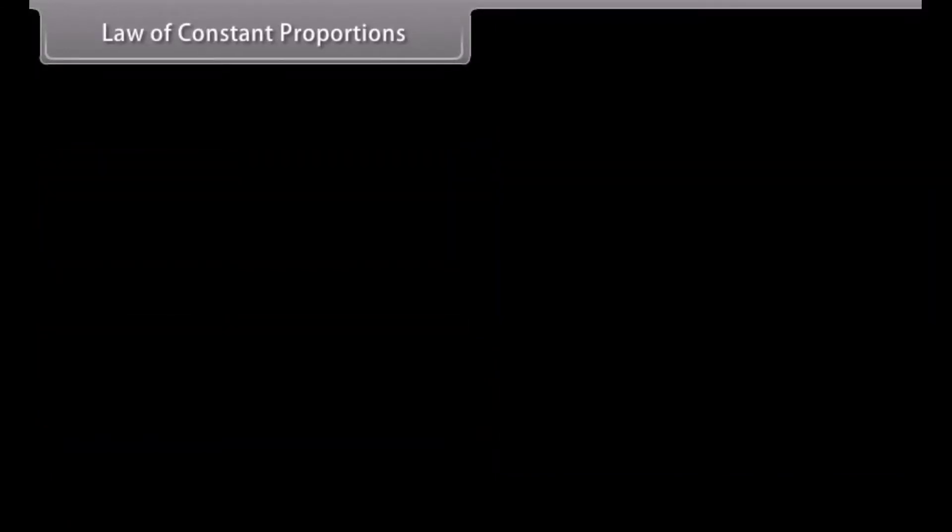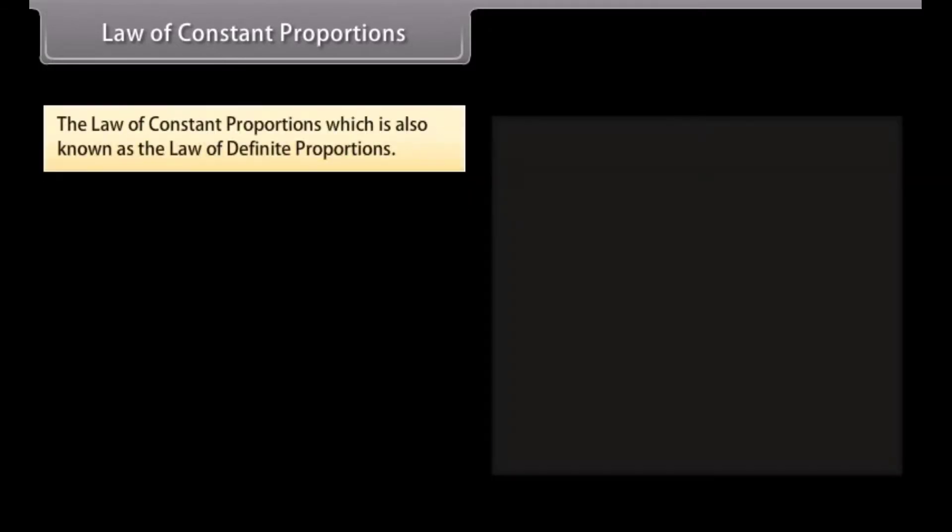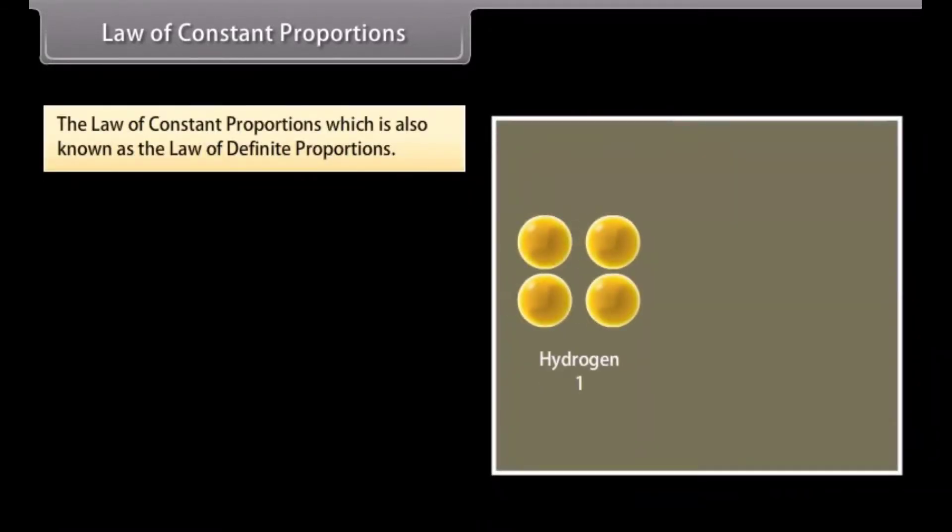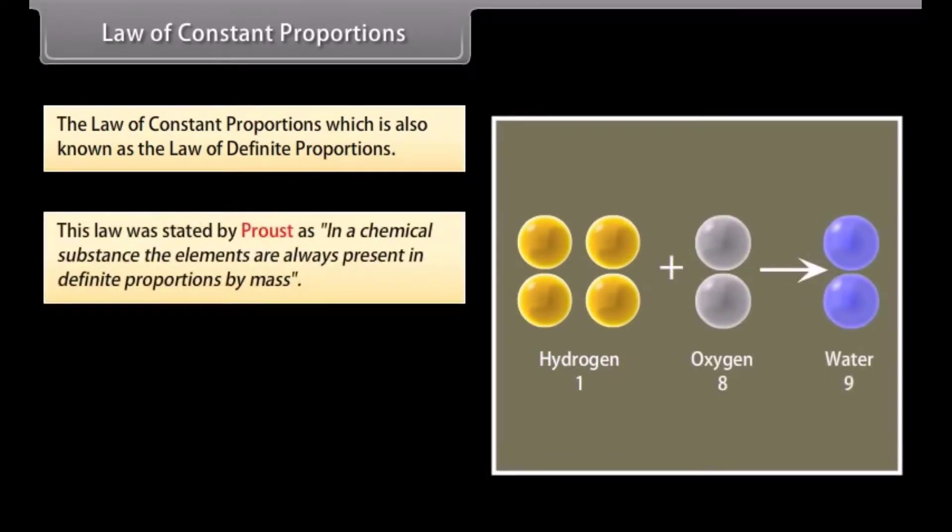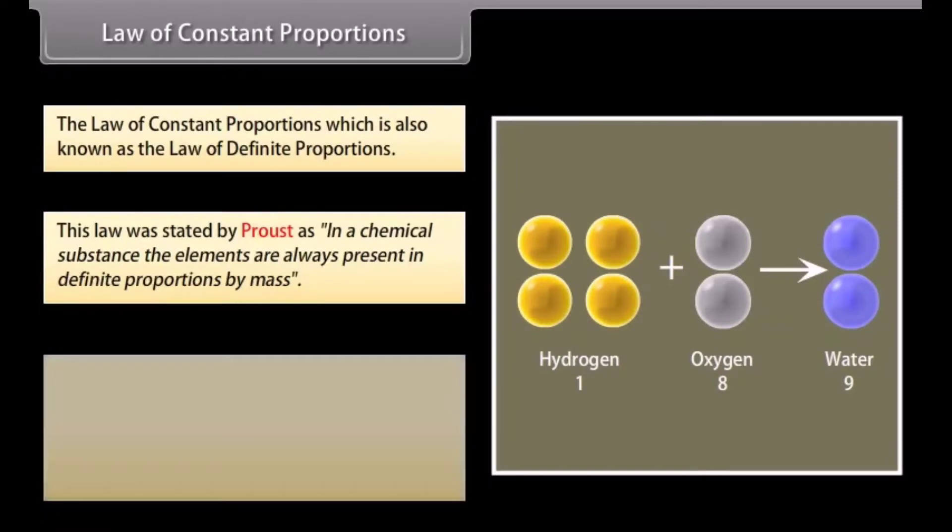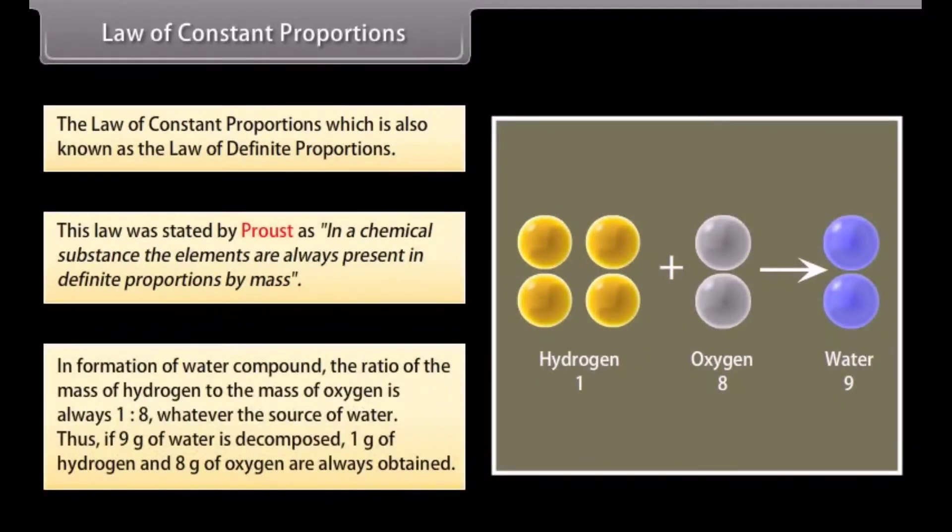Law of Constant Proportions. The Law of Constant Proportions, which is also known as the Law of Definite Proportions, was stated by Proust. In a chemical substance, the elements are always present in definite proportions by mass. In formation of water compound, the ratio of the mass of hydrogen to the mass of oxygen is always 1 is to 8, whatever the source of water. Thus, if 9 grams of water is decomposed, 1 gram of hydrogen and 8 grams of oxygen are always obtained.